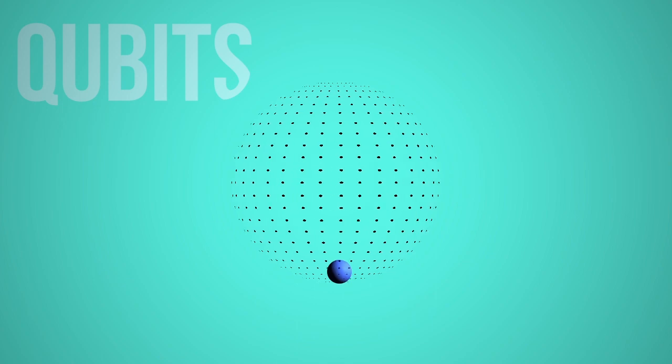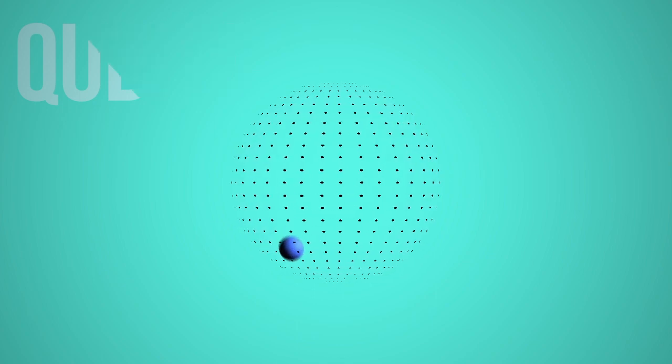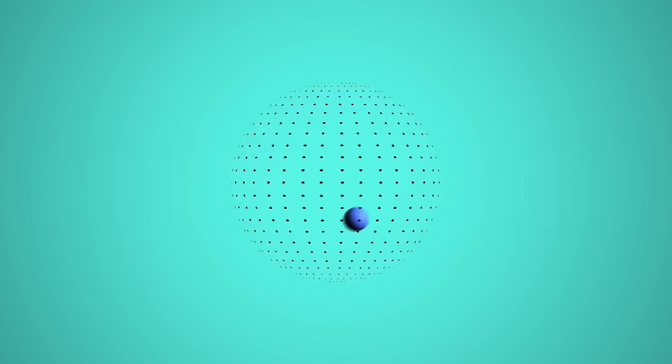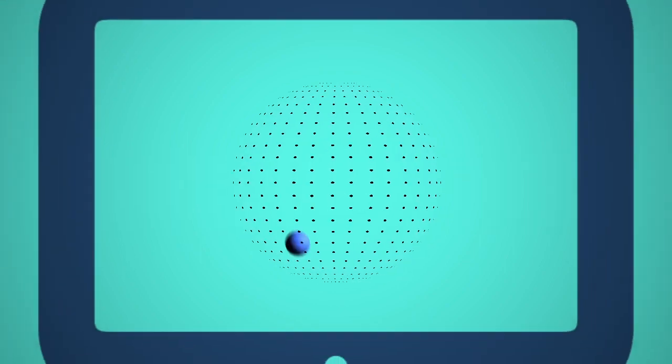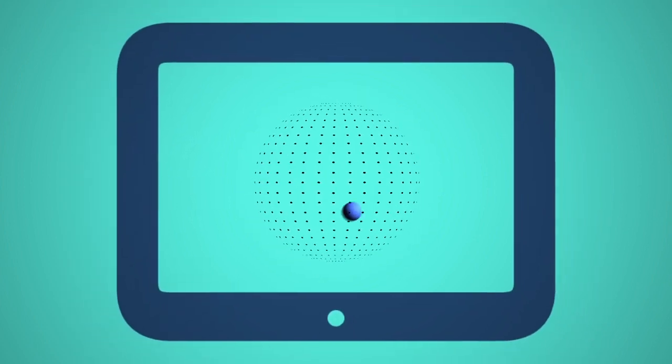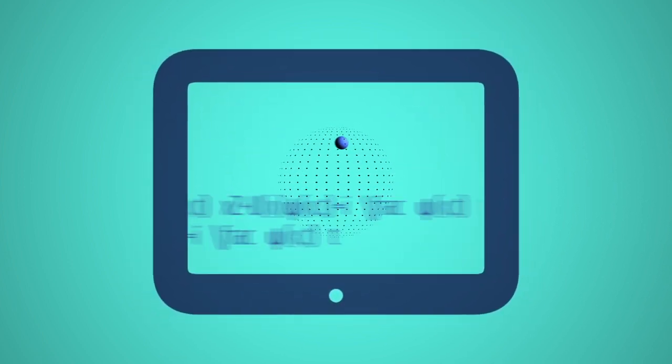A qubit can be in those places, but it can also be in other locations on the sphere. This is called superposition. And without getting into complicated physics that I don't really understand, here's what it means. Quantum computers have the potential to do a lot more with a lot fewer bits. And that means that especially for some kinds of calculations, they'll be much, much faster.